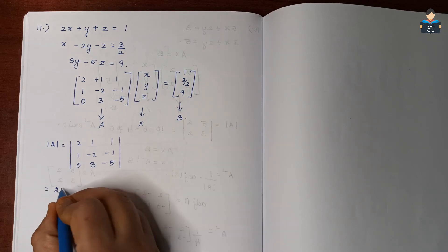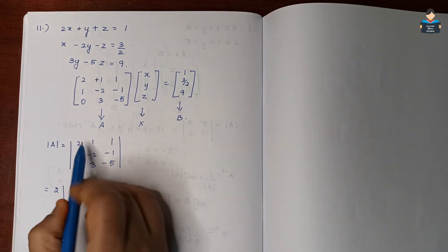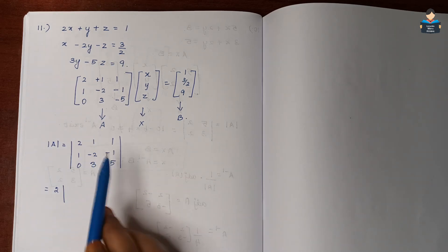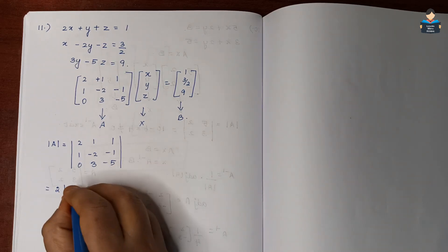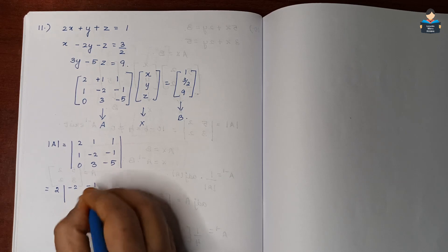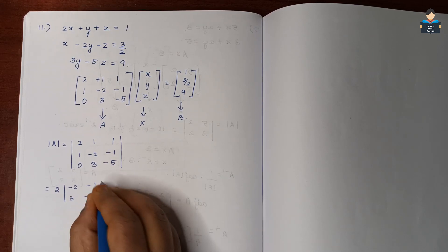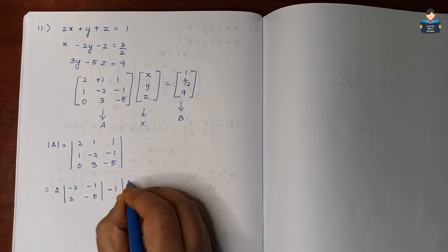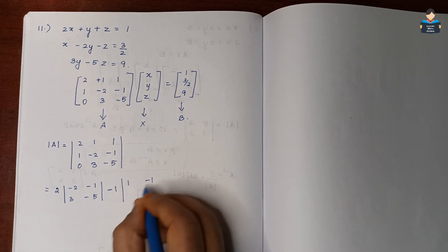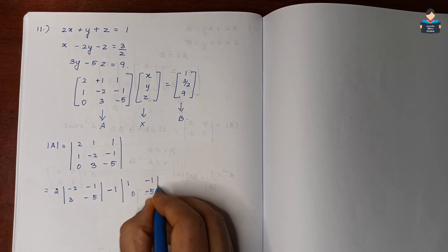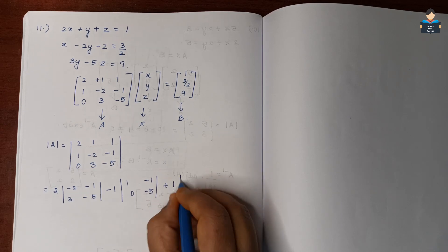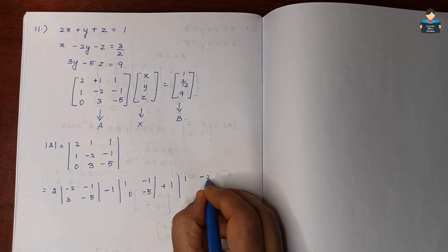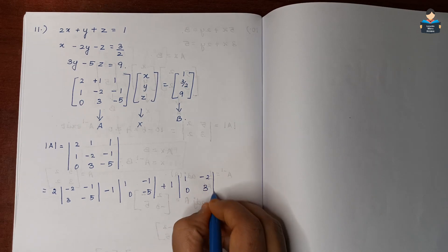Expanding det(A) along the first row: det(A) = 2 × |(-2, -1; 3, -5)| minus 1 × |(1, -1; 0, -5)| plus 1 × |(1, -2; 0, 3)|. Computing each 2×2 determinant: (-2×-5 minus 3×-1) = 10 + 3 = 13; (1×-5 minus 0×-1) = -5; (1×3 minus 0×-2) = 3.